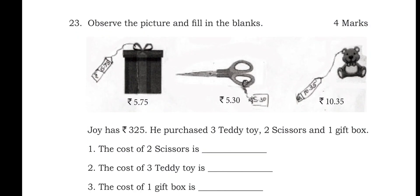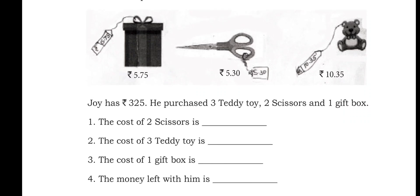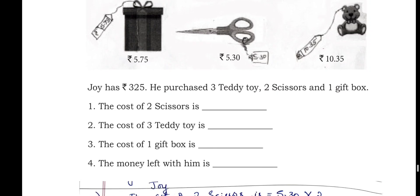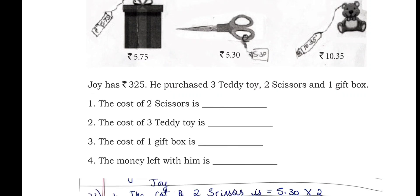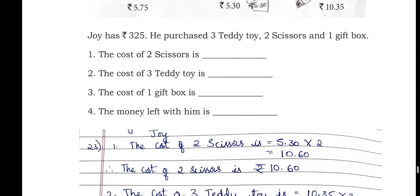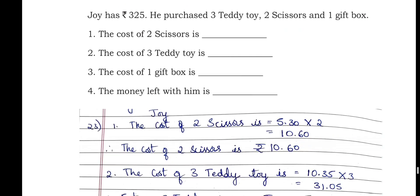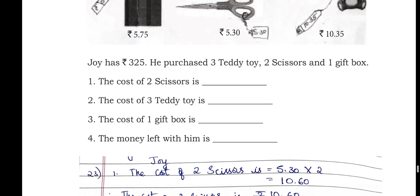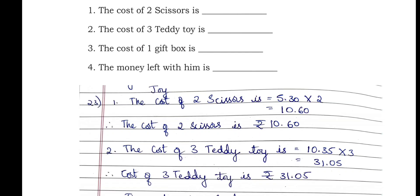Observe the picture and fill in the blanks. Joy has ₹325 and purchased three teddy toys, two scissors, and one gift box. The cost of two scissors: each scissors costs ₹5.30, so two scissors = ₹10.60.